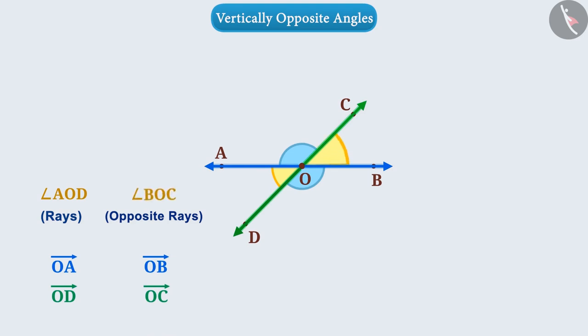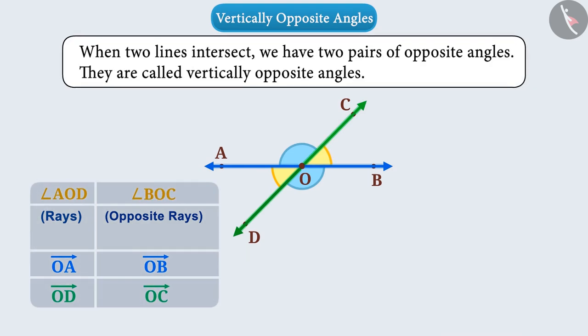Here the angle BOC is formed by these opposite rays. When two lines intersect we have two pairs of opposite angles. They are called vertically opposite angles.